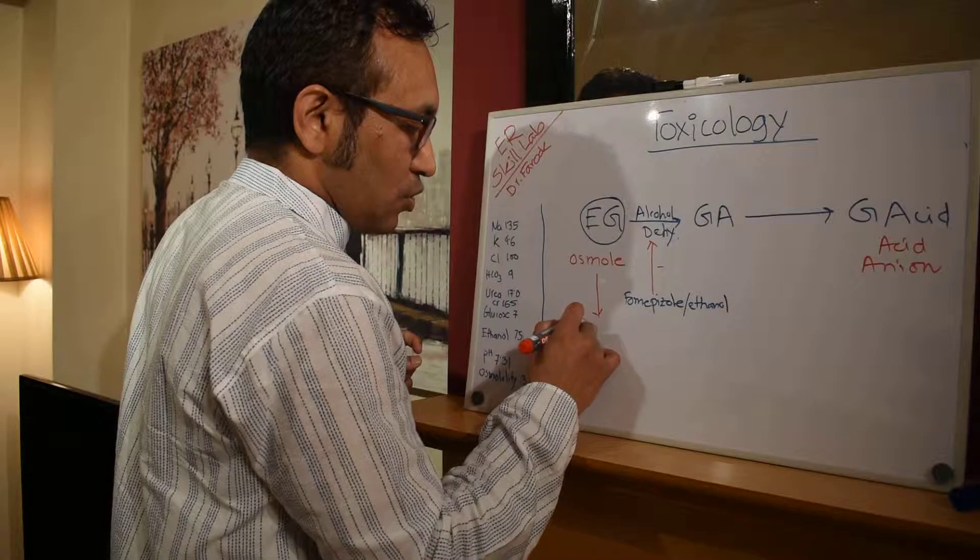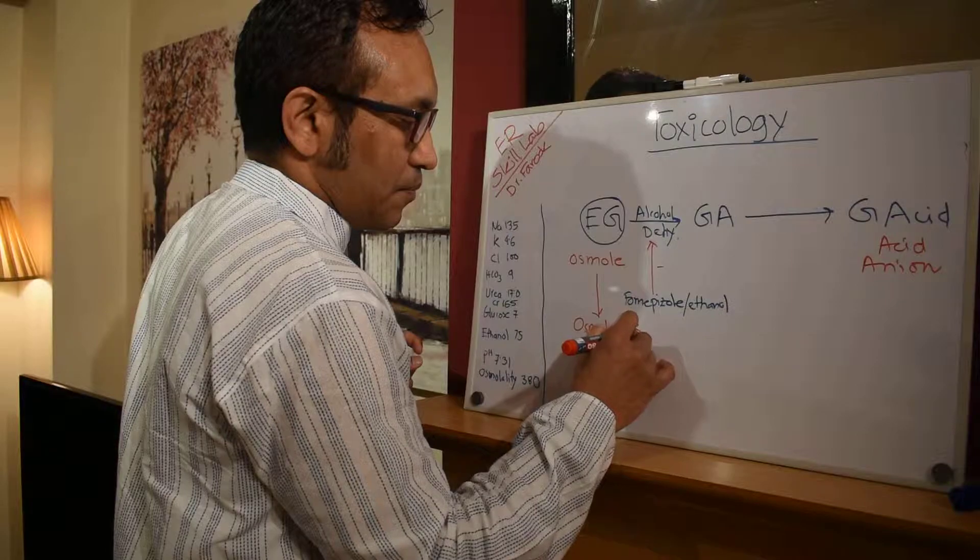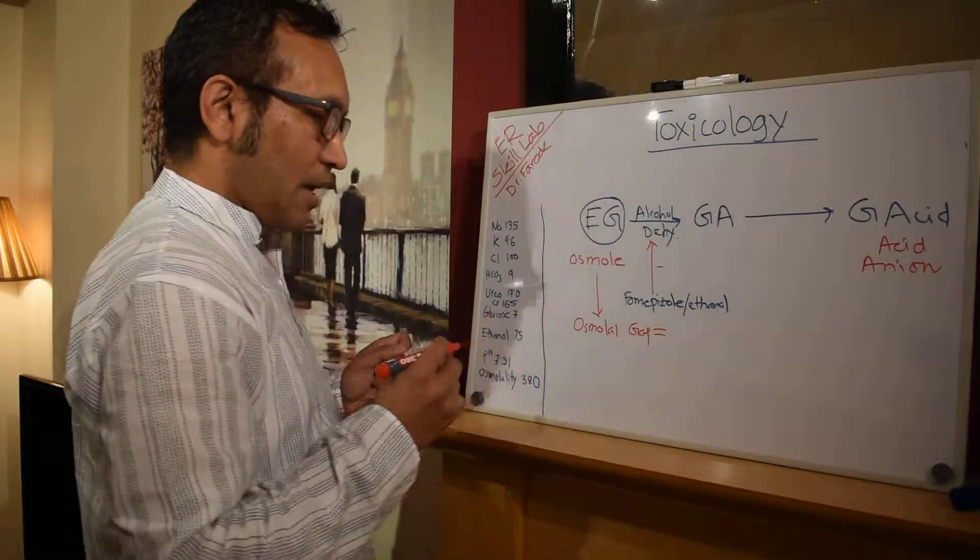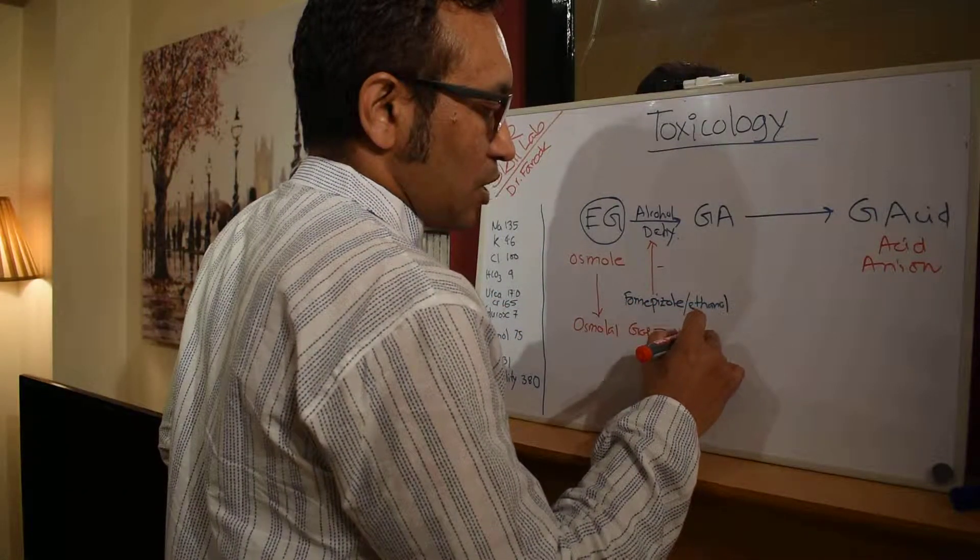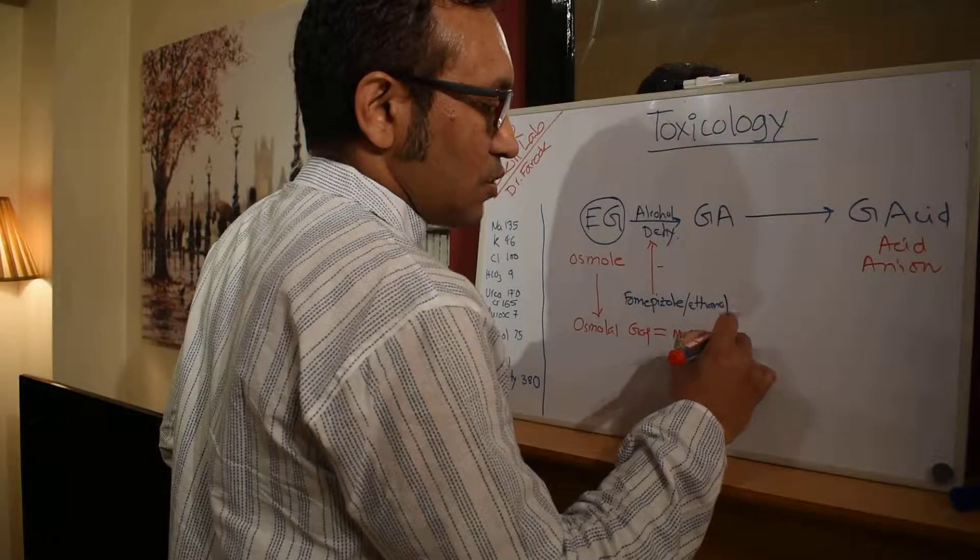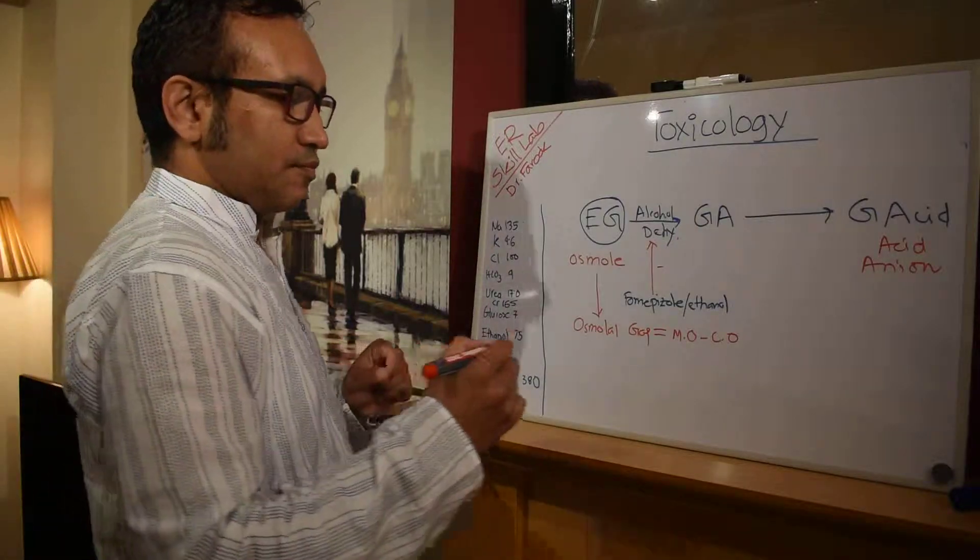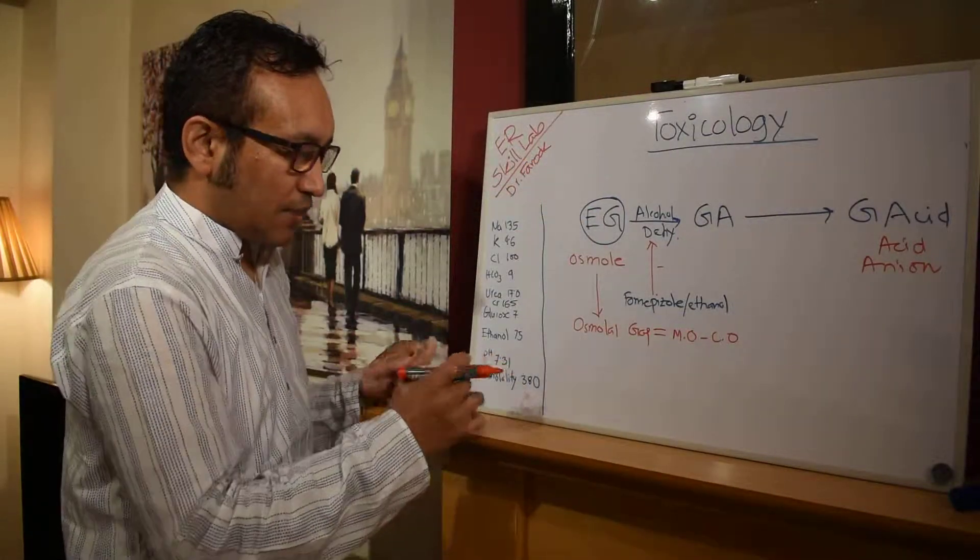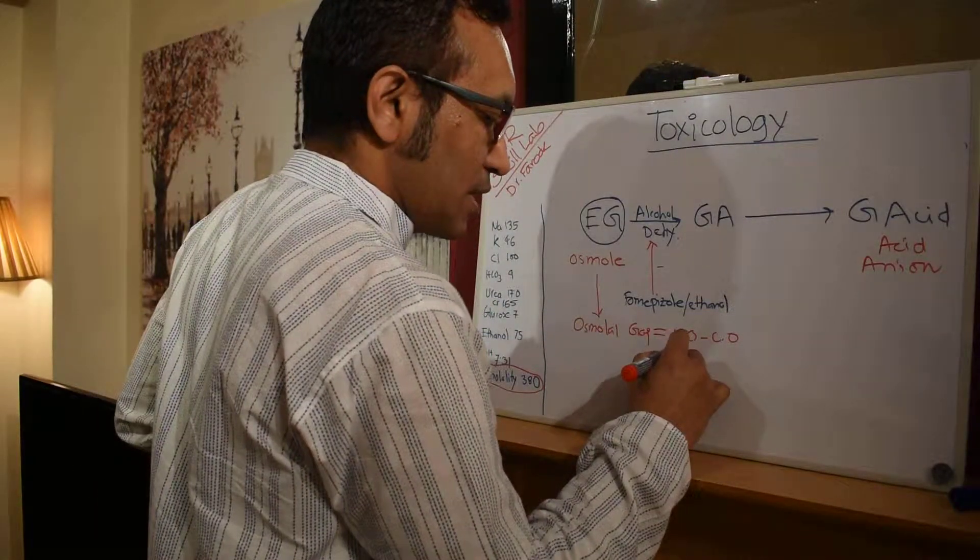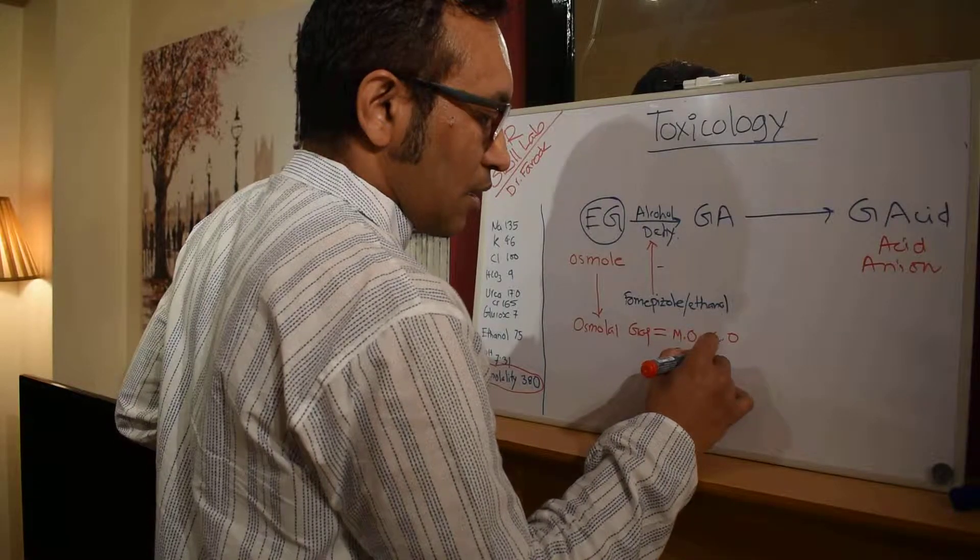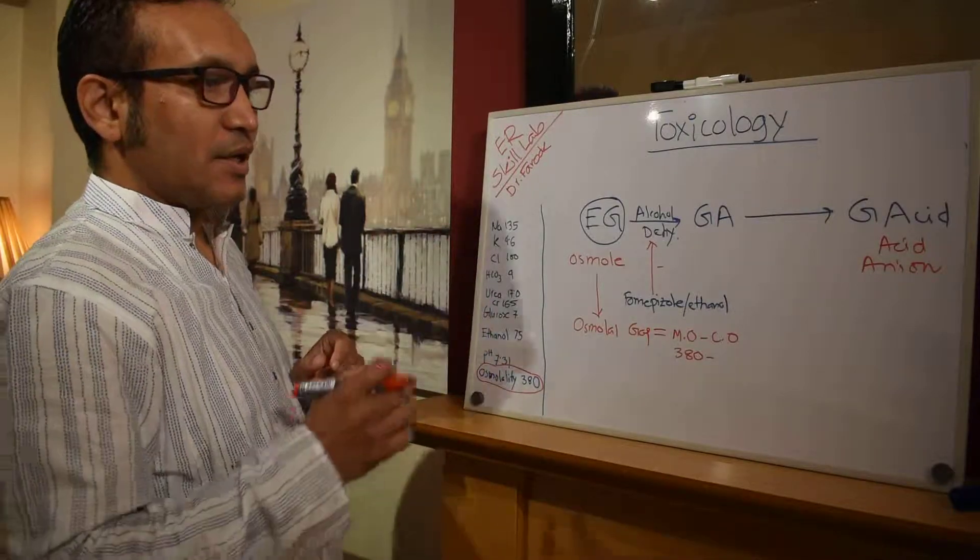To find out what level here as an osmol, we want measured osmolality minus calculated osmolality. The measured osmolality should be given, so osmolality is 380, measured osmolality is 380 milliosmol per liter. Then we need to calculate the osmolality from the other values and I will tell you soon.